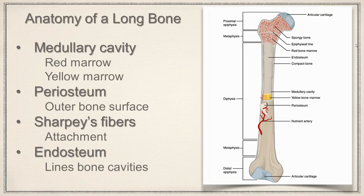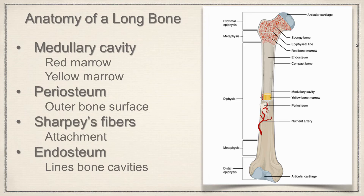Surrounding the bone we have what's called the periosteum. Peri — think of the perimeter — means around the outside, so this is wrapping around the outer bone surface itself. Attaching it is going to be Sharpey's fibers, also called perforating fibers. Sharpey was the name of the person who first described them, but they're moving away from eponymous names, so you'll also hear perforating fibers. In a bit we're going to look at a bone model and I'll show you the periosteum and what Sharpey's fibers look like — again, those attach the periosteum to the bone itself.